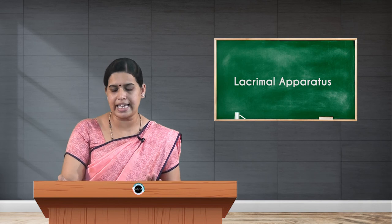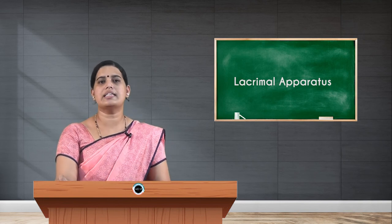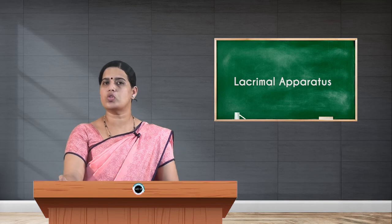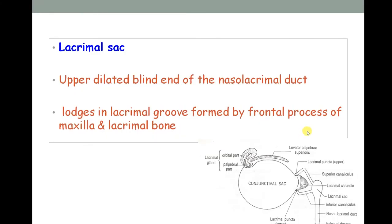The lacrimal sac is located in a groove — the lacrimal groove — in the lacrimal bone, with a portion also in the frontal process of the maxilla. This lacrimal sac then leads to the nasolacrimal duct. Inflammations or cyst formations of the lacrimal sac are called dacrocystitis.